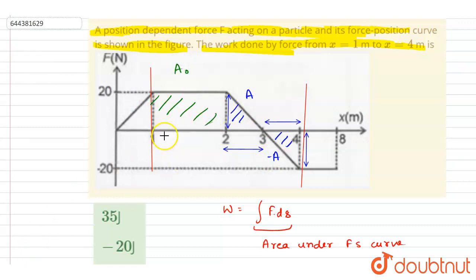If you see here, this length is 1 and this length is 20, so it is 20 into 1, so it is 20 joules. So this is the net work done.